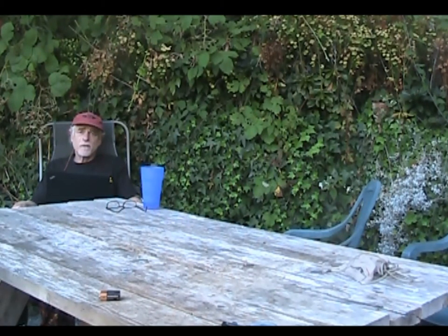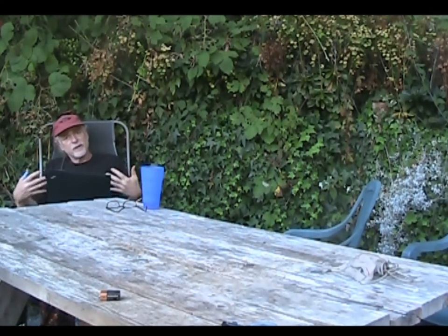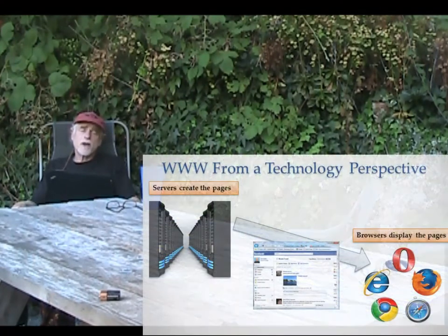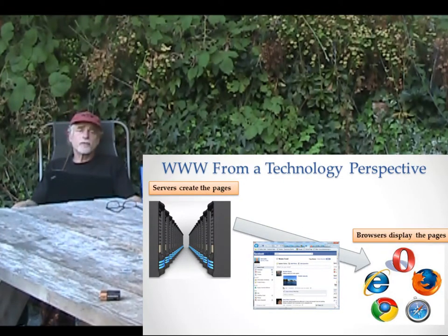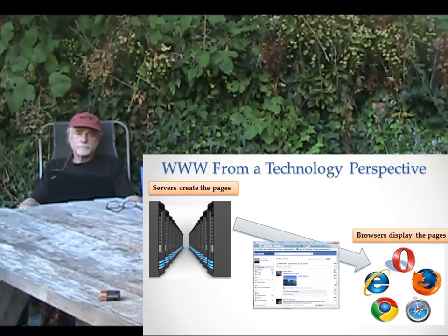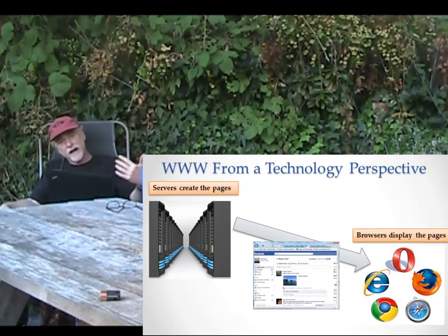The World Wide Web consists of some computers that are sending information and some computers that are consuming information. The ones that are sending information are called servers. The servers are programs that run on computers to serve information through the Internet to other computers. A server serves information, and then on the other side, on your computer, on most of the computers that you work with,